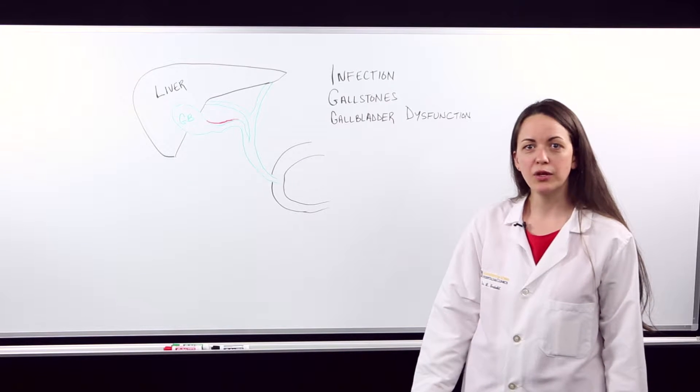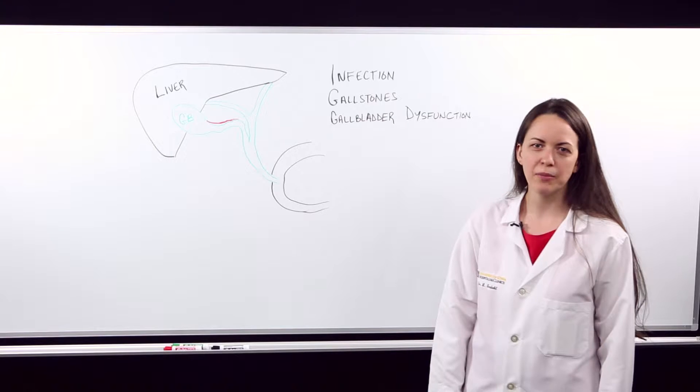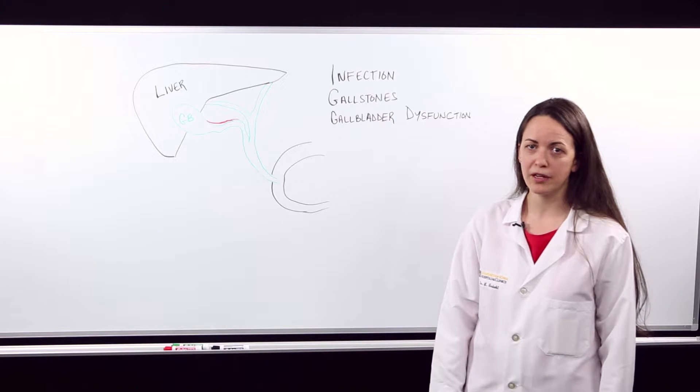Some of the ways that we might diagnose gallbladder disease are with certain tests such as a right upper quadrant ultrasound. That shows us the gallbladder anatomy as well as the bile ducts and the cystic duct draining the gallbladder.